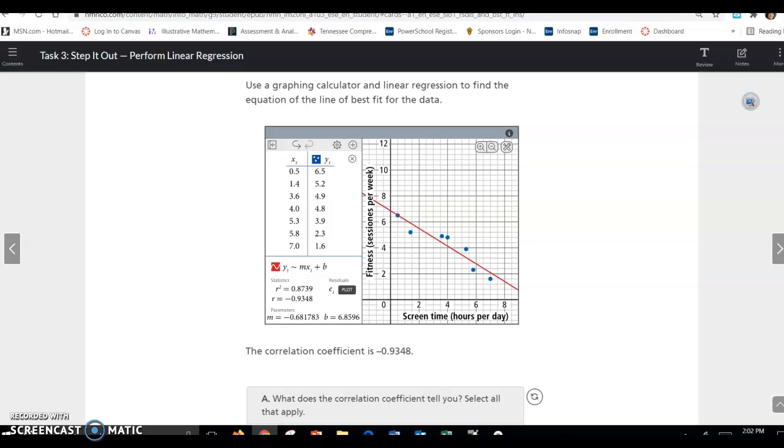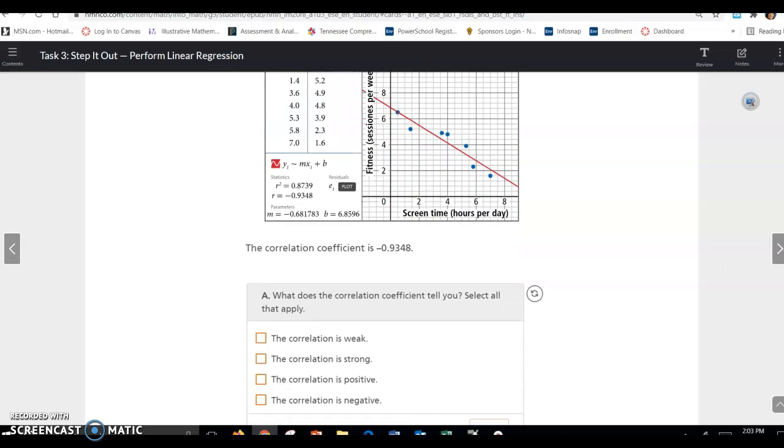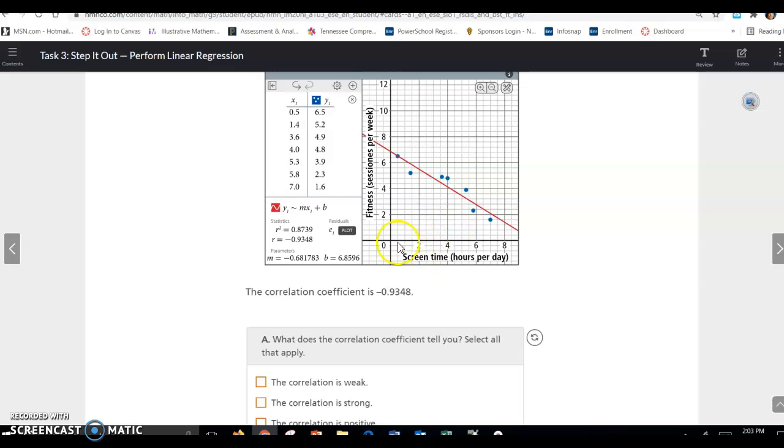So it says use a graphing calculator and linear regression to find the equation of the line of best fit for the data. They put the X's and Y's. That's in your L1 and L2 if you have a TI-84. And then they've asked it to write an equation for you. So you can see how it's graphed the points, and then you've got that linear regression line there. You can see here's the number of hours spent on your screen, screen time hours per day. So the number of hours you spend on your screen goes up, the fitness goes down, the amount of fitness per week goes down.